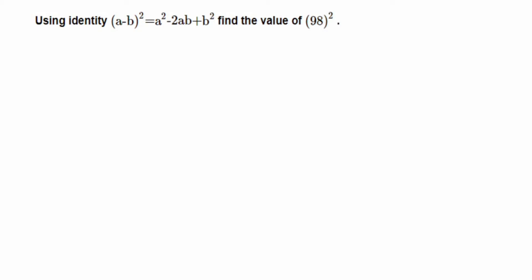Hey everyone, so here's a question on factorization. The question is, using identity (a - b)² = a² - 2ab + b², find the value of 98². We are asked to use this identity and then solve it. We don't have to take 98 square directly.